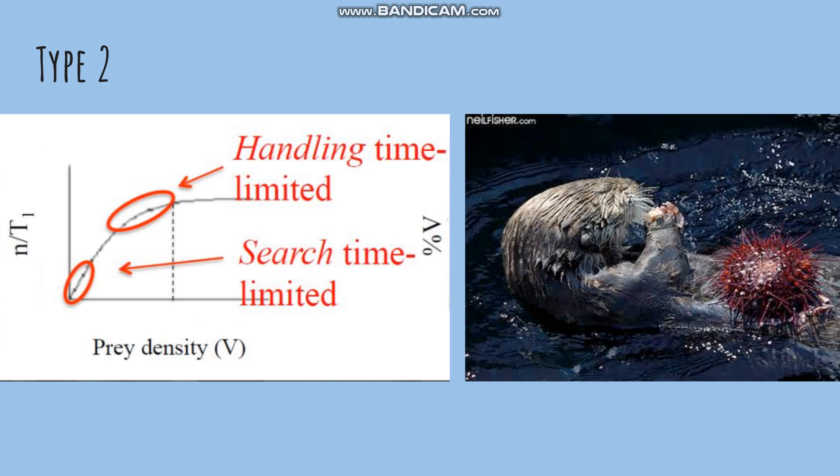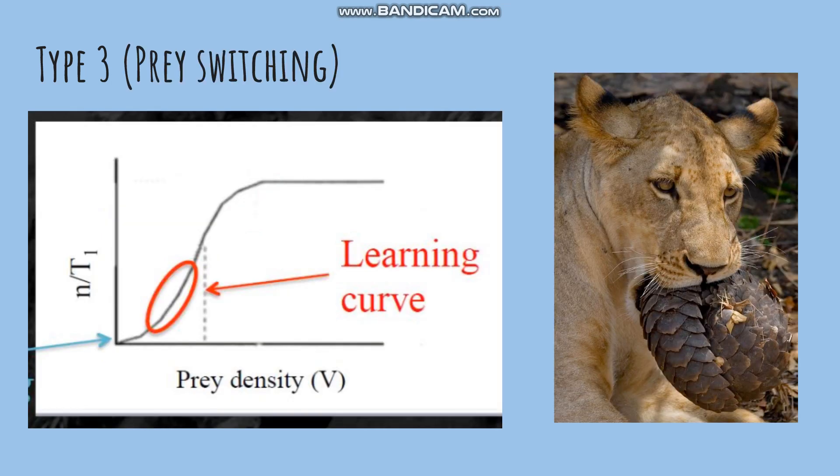In Type 2, the rate of prey capture negatively accelerates as it increases with food density. Then at an intermediate stage, the predator spends less time searching for prey and more time handling the prey. The most common example is the sea otter eating urchins — sea urchin density will level off as the maximum feeding rate of the sea otter is met.